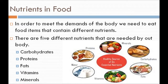Nutrients in food. In order to meet the demand of the body, we need to eat food items that contain different nutrients. There are five different nutrients that are needed by our body. Each one has a different function. These are: carbohydrates, proteins, fats, vitamins and minerals.